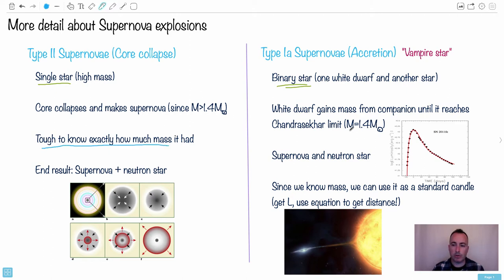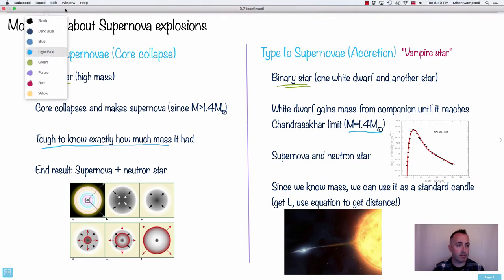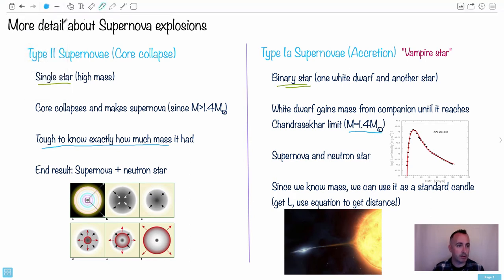Whereas here, we'll know the exact mass. I'll explain that in a second. And the end result, the end result is you get a supernova and a neutron star. And this other one, the end result is still a supernova and a neutron star. So they seem very similar, so who cares? I'll explain why we care.